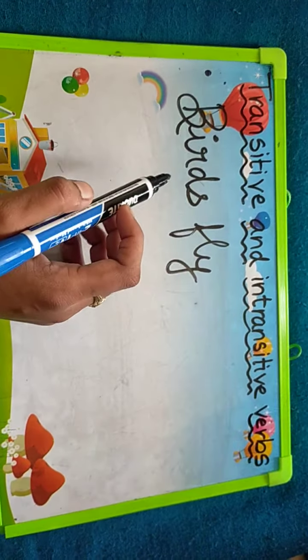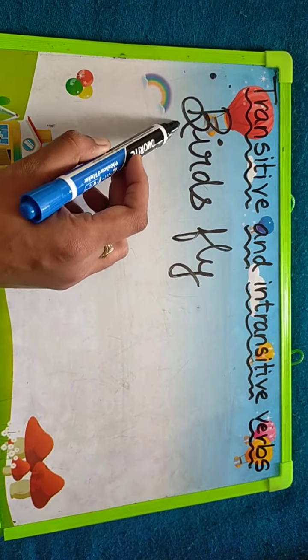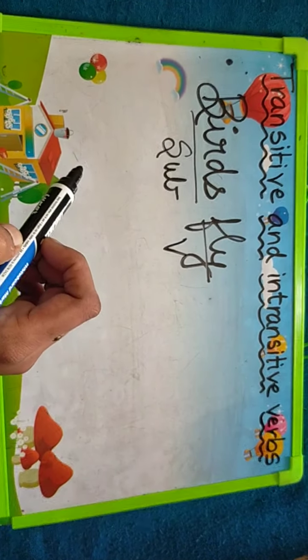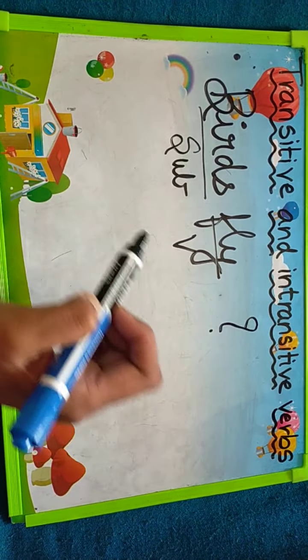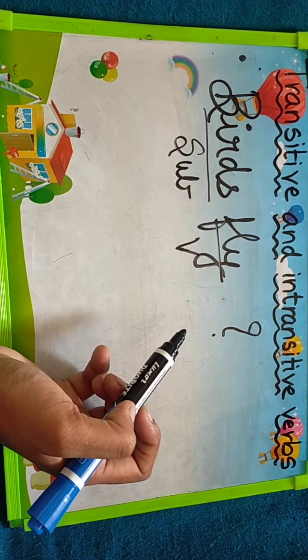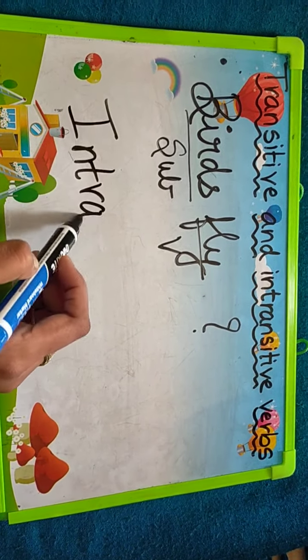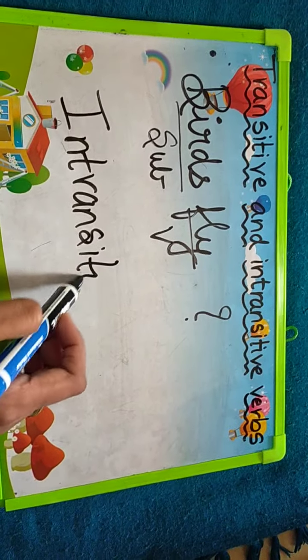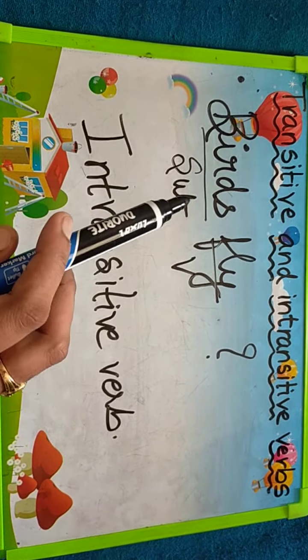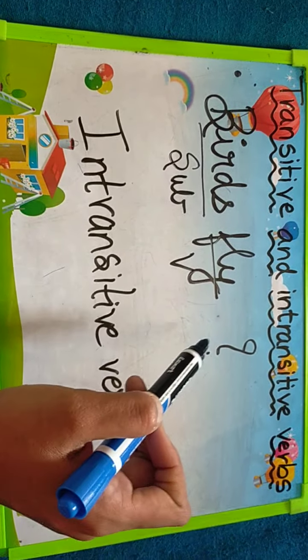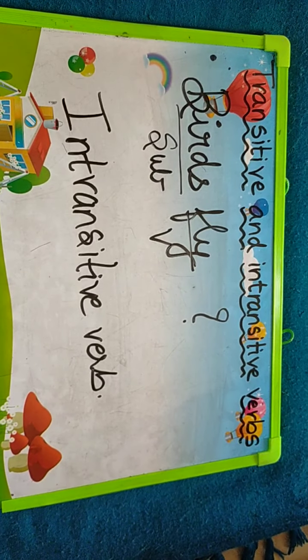Now look at the next sentence: 'Birds fly.' Here, 'birds' are the subject and 'fly' is the verb. But where is the object? Where do the birds fly? It is not mentioned. So here the verb will be an intransitive verb. When there is subject plus verb plus object, it is transitive. But here the object is not given, so the verb will be an intransitive verb.